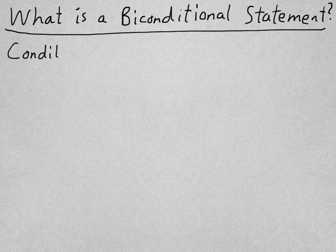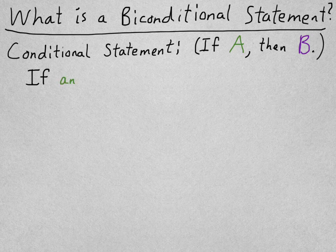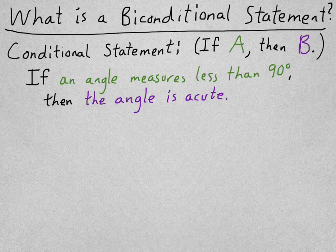So what is a biconditional statement? Well, we know what a conditional statement is, we covered that in the last video. That's if A then B. So take this example, if an angle measures less than 90 degrees, then the angle is acute. That is a true statement.